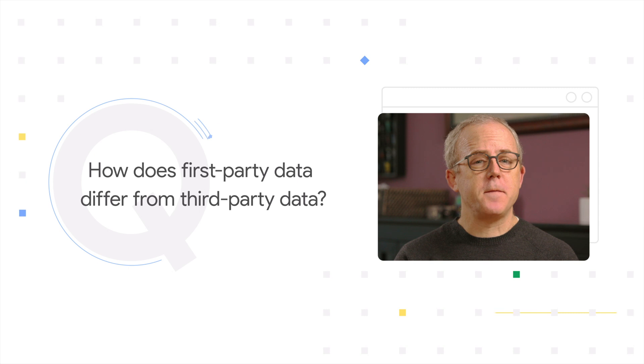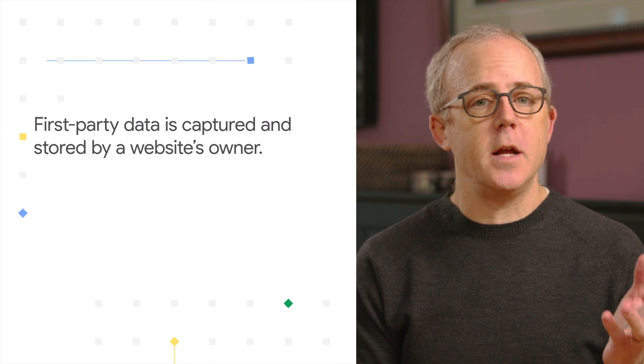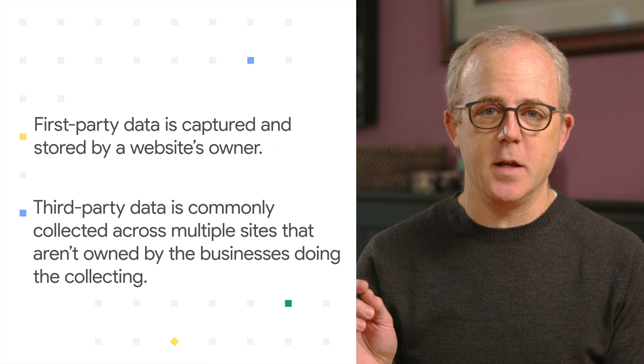How does first-party data differ from third-party data? This is important — it's the reason why the ad industry is investing more in privacy-forward first-party data and moving away from third-party data. There are two main differences. First, who is collecting the data? First-party data is captured and stored by the website or app owner. Third-party data is commonly collected across multiple sites that aren't owned by the businesses doing the collecting. The second difference is transparency. With first-party data, people give businesses they have direct relationships with permission to use their data, and the businesses are responsible for how the data is used.